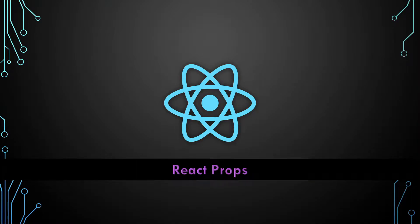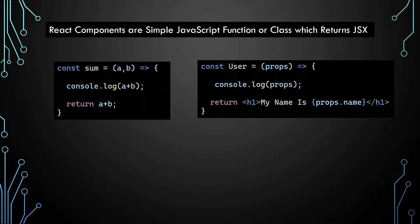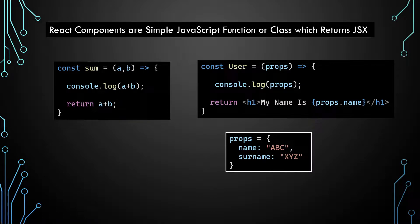Hello guys, I am Devendu and in this video we will see what are props and how to use them. We all know that React components are simple JavaScript functions or classes which return JSX, and just like any JavaScript function they can also take some inputs. For React components, these inputs are called props, and props stands for properties. React props are just like a JavaScript object which has some key-value pairs.